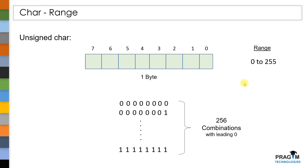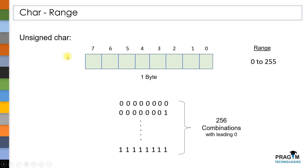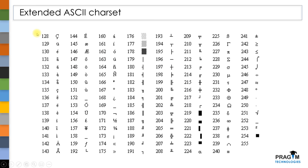Now the question is: is there any necessity of using unsigned type modifier for a character variable? Yes, there is. Apart from the normal ASCII table, there is another ASCII table called the Extended ASCII Charset. In this Extended ASCII Charset, we have a total of 128 characters, and those values are ranging from 128 to 255.